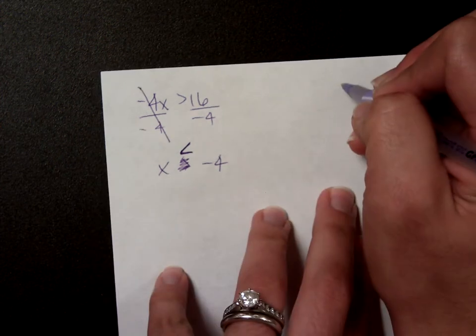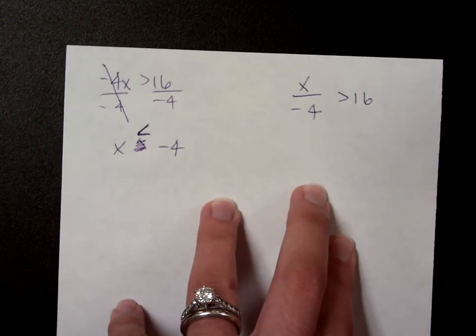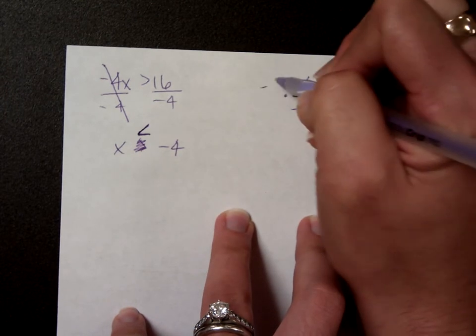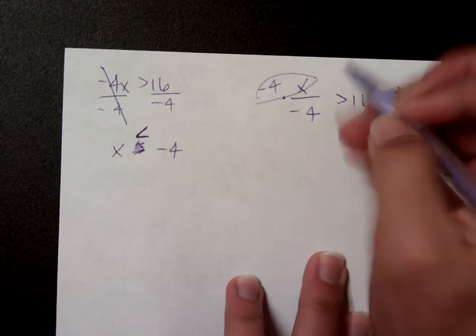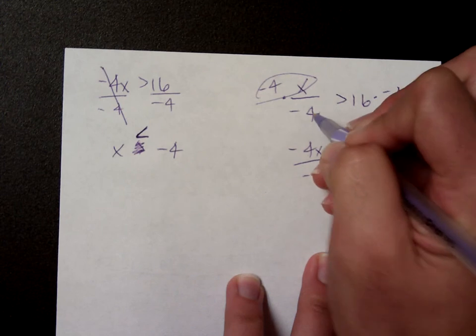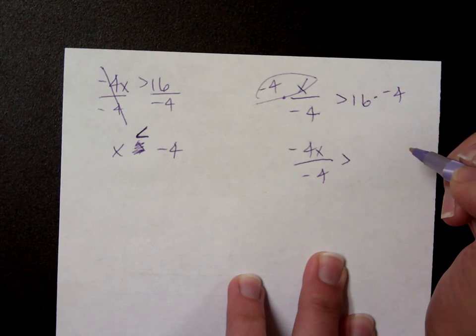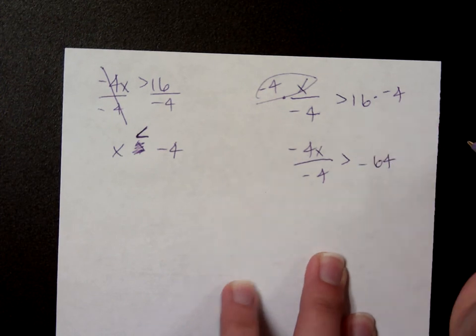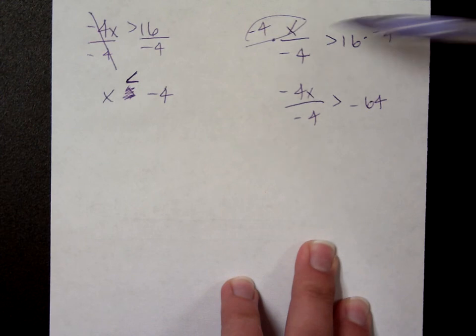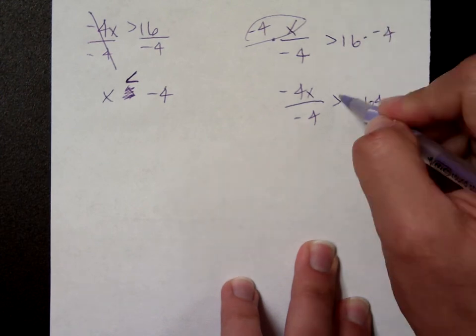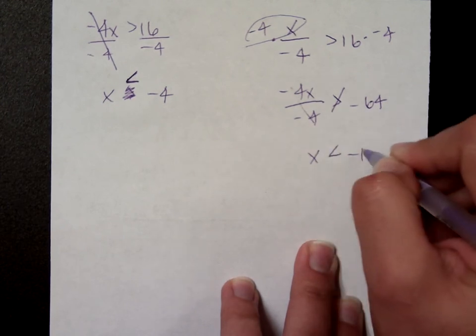Same thing goes for if I had x divided by negative 4 is greater than 16. In order to undo this division, I have to multiply by negative 4. Remember, you only multiply the top, so this gives me negative 4x divided by my negative 4 is greater than 16 times negative 4, which is, what, negative 64? So, since I multiplied by a negative number, I have to reverse my sign. So, this would be x is less than negative 64.